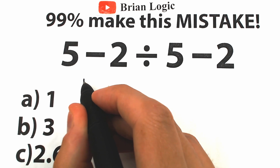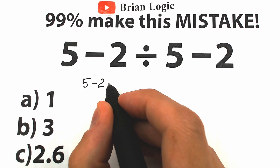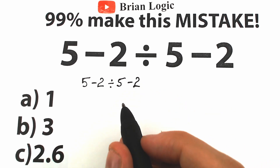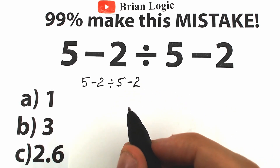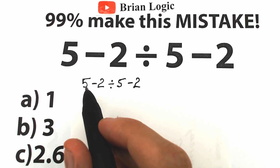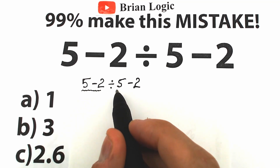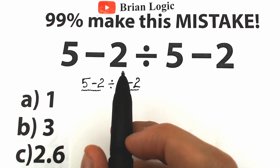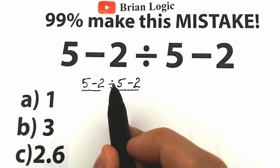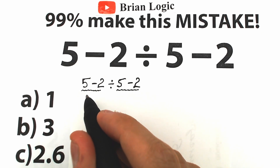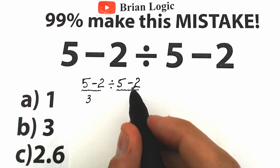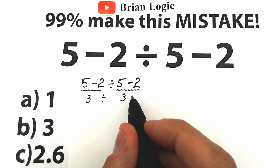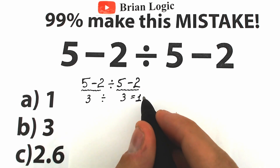Let's write our question right here. We have 5 minus 2, divided by 5 minus 2. A lot of students might say: okay, 5 minus 2 and 5 minus 2 — the same expression. It looks like we divide this expression by itself, and as a result we have 5 minus 2 equals 3, and 5 minus 2 also equals 3. So 3 divided by 3 equals 1. That's Option A.